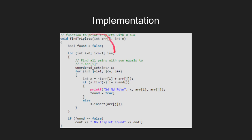Let's look at the implementation of this problem in C++. First we initialize found as false. Then we loop from i equal to 0 to i equal to n-2 and create a hash table. Then we run a loop from j equal to i plus 1 to j equal to n-1. If negative times the sum of the ith and jth element is found, we print those values. Else, we insert the jth element into the hash table.